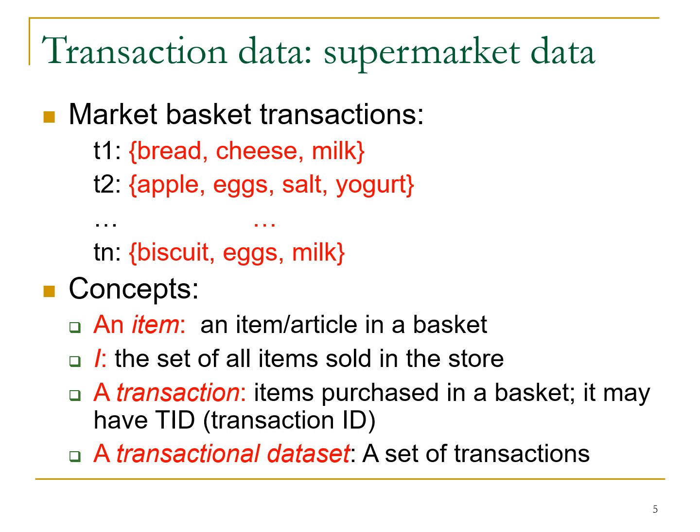We list out the transactions like T1, T2, T3 and build the database. In the diagram, you can see transaction 1 where a customer bought bread, cheese, and milk; transaction 2 has apple, eggs, salt, and yogurt; and the last transaction has biscuit, eggs, and milk. An item is an article in a basket — the element which belongs to a basket. I is the set of all items sold in the store.